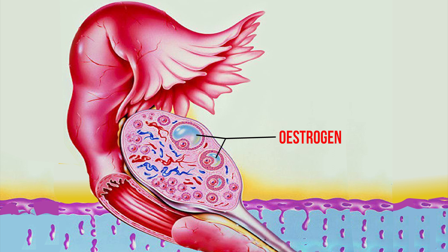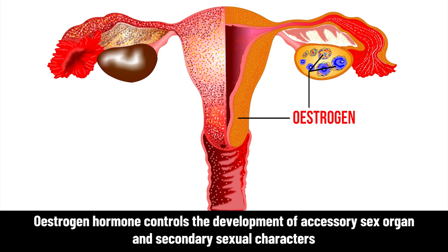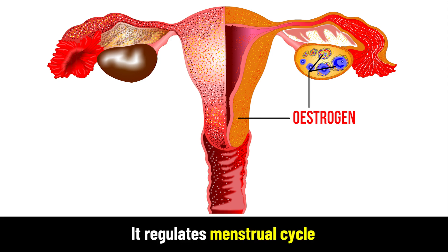Estrogen hormone controls the development of accessory sex organs and secondary sexual characters. It also regulates the menstrual cycle.